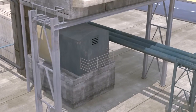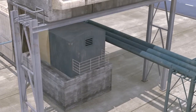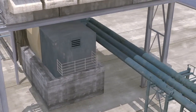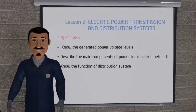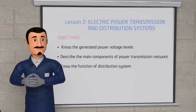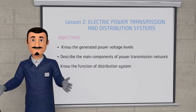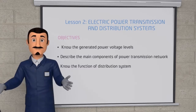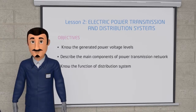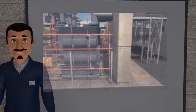The generated power may have a voltage level of 13.8, 20, or 24 kilovolt. Now we have covered how SEC produces electricity. Let's see how it transmits this current and how it is distributed to customers.